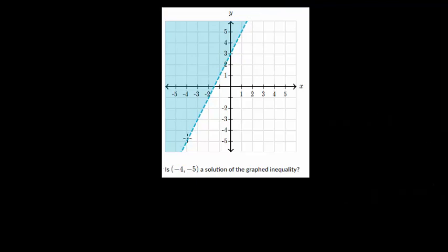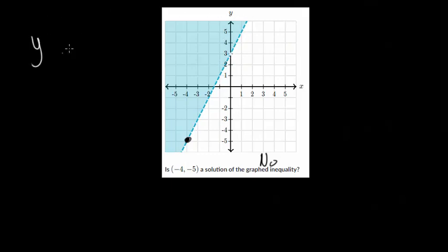In this one, we actually have a dashed line. Let's start by plotting the point: is (-4, -5) a solution? Here's -4, go down to -5 — and notice this is on the border. Relative to the last one, that had a solid line, so points on the border were a solution. But since it's a dashed line, points on the border are not included, so this answer is going to be no. The inequality has a y-intercept of 3, we're shading above the line, so it's greater than — but not equal to — because it's a dashed line.